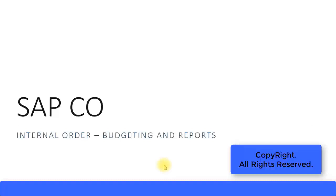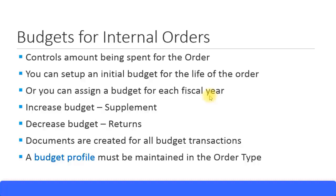Let's look at budgeting and reports for internal orders. Budgets for internal orders control the amount being spent for that particular order. If you assign a budget for an internal order — for example, $1,000 — then you cannot exceed more than $1,000. Budget is basically like a control. You can set up an initial budget for the life of the order, meaning throughout the order until it gets closed.